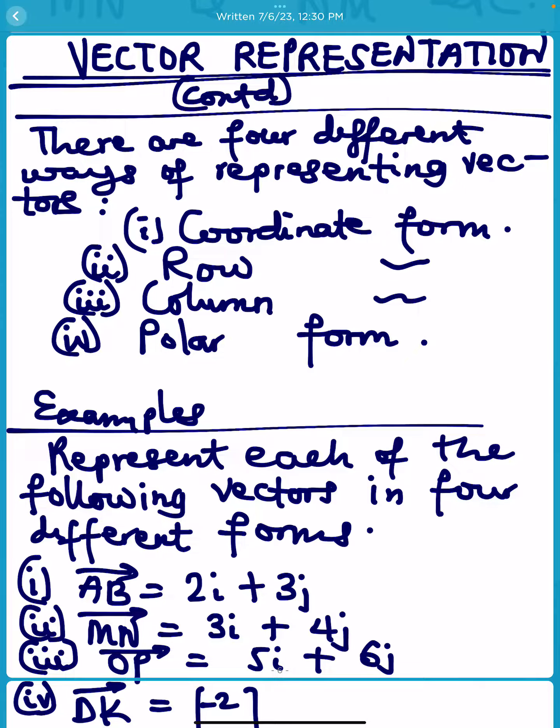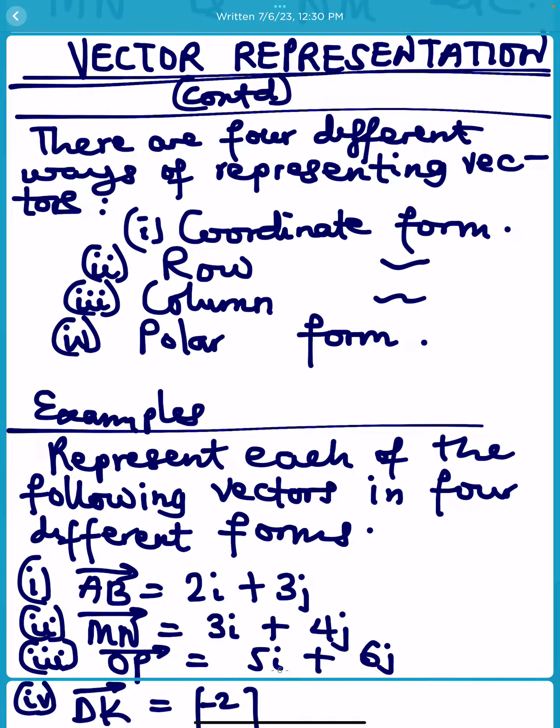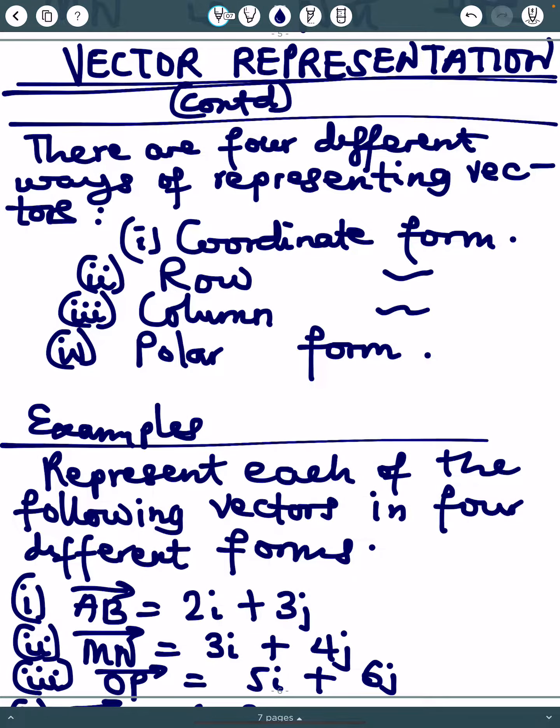Vector representation. There are four different ways of representing vectors - four different ways of representing the same vector. For example, if you have one vector AB which is equal to 2i plus 3j, this expression gives AB in one way.